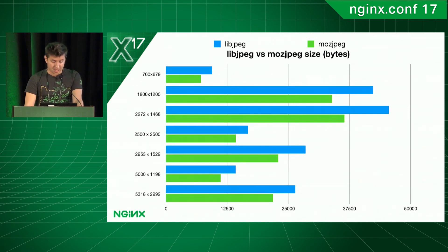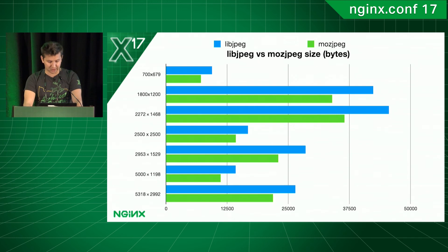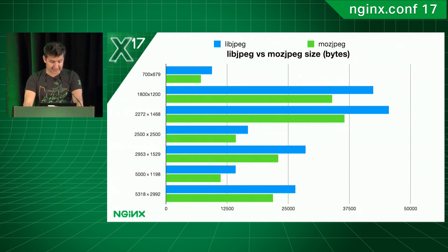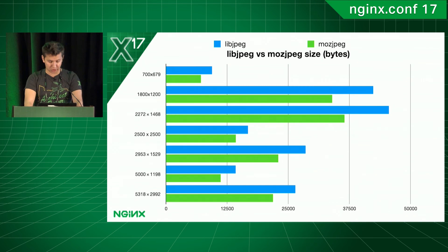To summarize: it is always useful to use LibJPEG-Turbo or MozJPEG as a replacement for libjpeg. If processing speed is important to you, use LibJPEG-Turbo. If you're interested in size optimization, it is better to use MozJPEG — and since your source images will likely be larger, you may also see a performance gain.